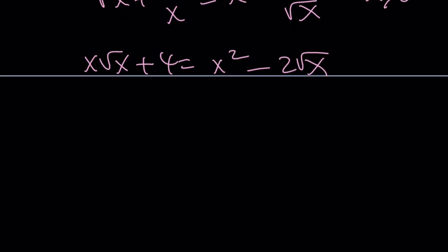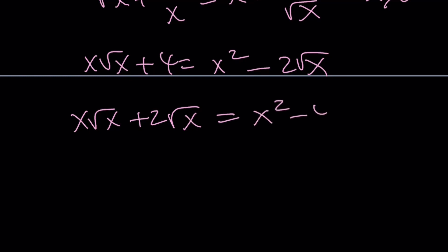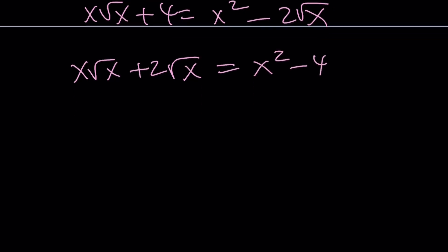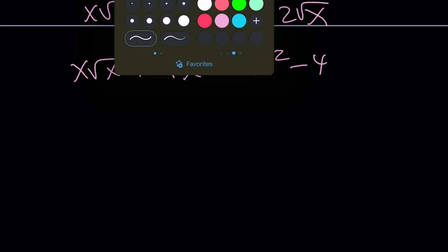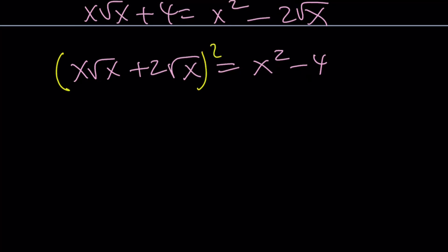Let's go ahead and put the radicals on the same side, and then square both sides. We have radicals on the left and non-radicals on the right, so let's make sure we get rid of all the radicals. If you square x root x, that gives us x squared times x because square root of x squared is x, and x squared is x squared — so this gives us x cubed.